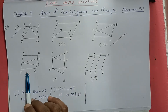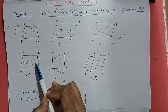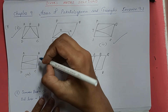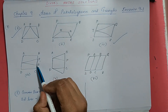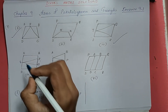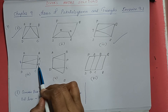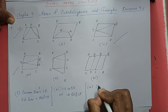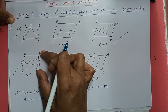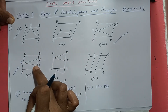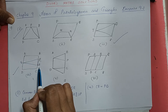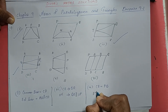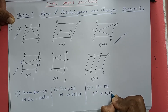Third figure: we have PQSR and triangle RQT, both lying on the same base QR. So the common base is RQ (or QR), and the parallel lines are QR parallel to SP. Next, the fourth figure: we have ADCB and triangle QRP, both on the same base PQ. Common base is PQ. The parallel lines: PQ is parallel to AD.